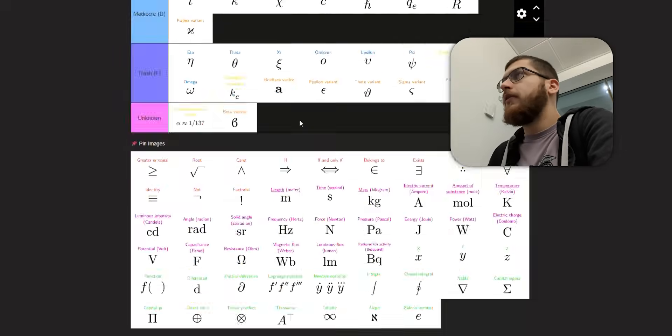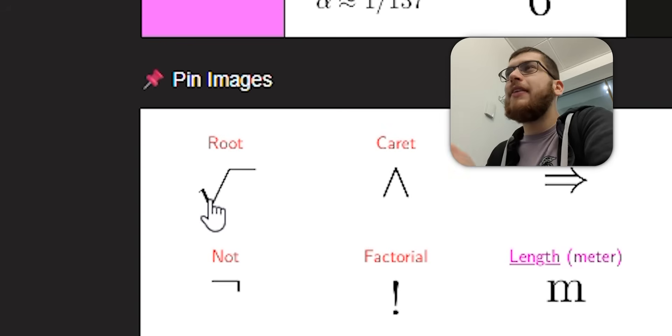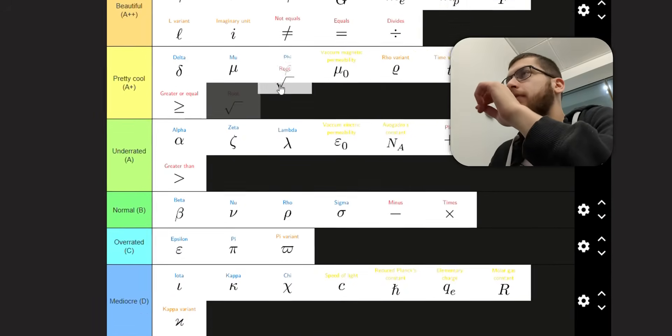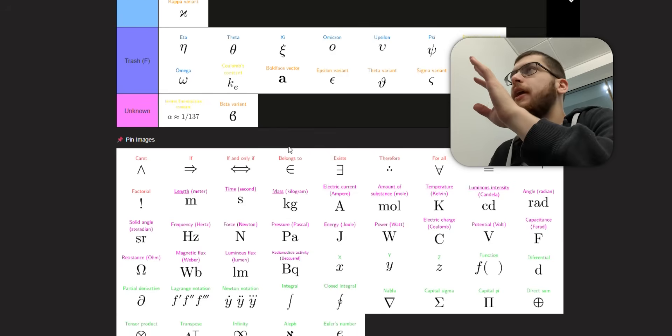These make perfect sense. So I'll put them in pretty cool. Because, obviously, you're going to just blend the two signs. The equals and the less than. And the equals and the greater than. Square root. It's a big R. Which makes sense. And I think it's quite a nice-looking symbol as well. So I'm going to put this in beautiful.